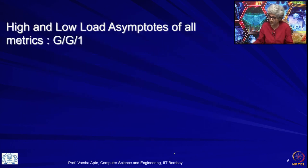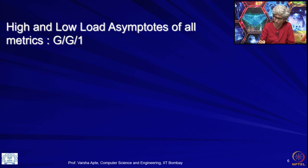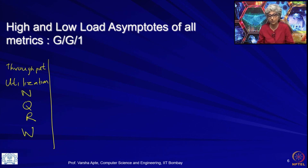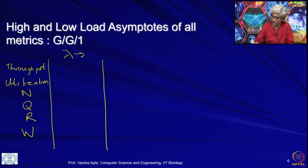We will actually see in the next lecture after asymptotes are done how asymptotes can be used to verify experiments or do some simple capacity planning. So let us talk about asymptotes. GG1 — infinite buffer, single server. Let us basically talk about what happens to throughput, utilization, number in system, number in queue, response time, and waiting time. We will fill a table: lambda going to 0 (low load) and lambda going to infinity (high load).